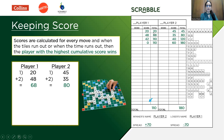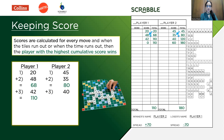Looking at the score sheet: you add 20 to 48 to reach a total of 68 for player 1. For player 2, 45 was the total after move 1, and adding 35 gives 80. In move 3, player 1 scores 42 points and the total becomes 110. Player 2 scores 40 points, and 80 plus 40 gives a total of 120. You only add your fresh score to the cumulative score before that move — you do not need to add all previous scores again.